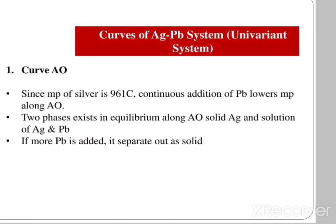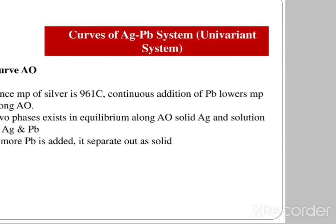Curve AO: the melting point of pure silver is 961°C. Continuous addition of lead lowers the melting point along curve AO. Two phases exist in equilibrium along this curve: solid silver and the solution of silver and lead. If more lead is added beyond this curve, it separates out as solid.